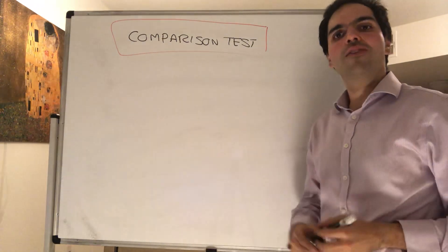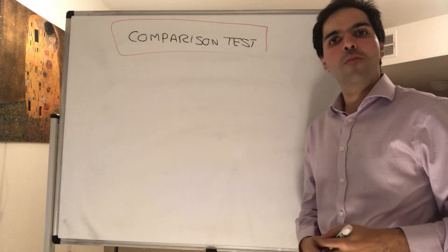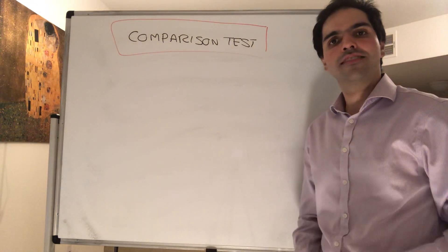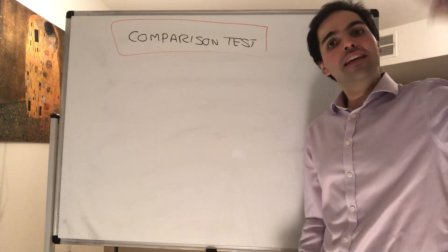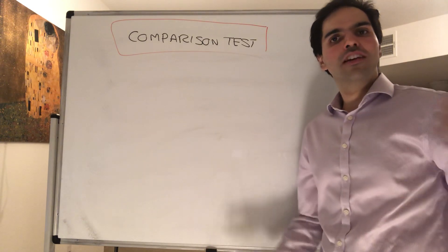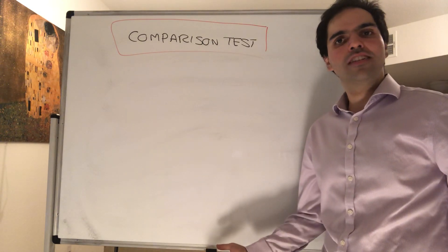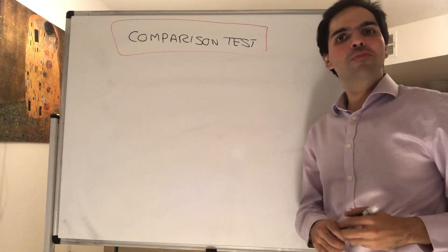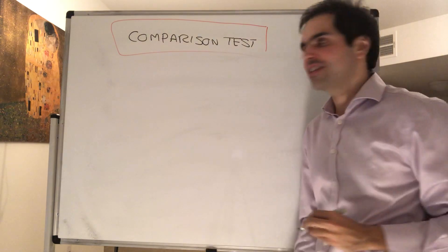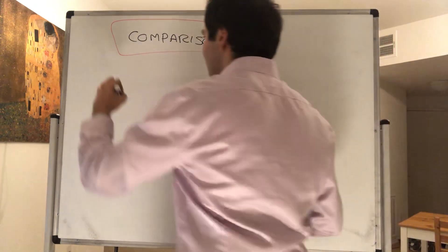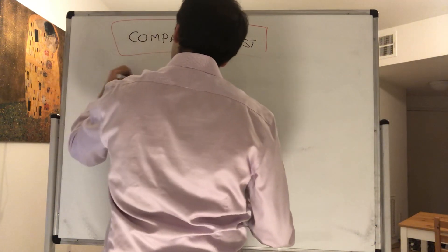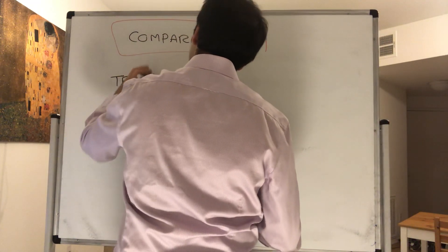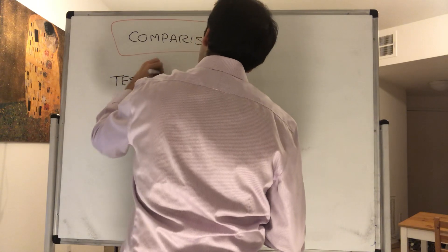Thanks for watching. Today I would like to prove the comparison test, which simply says that if you're smaller than a convergent series, then you must be convergent as well. So here's the first test; the second one will be very similar.